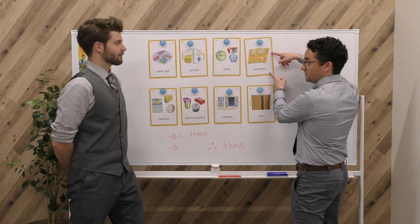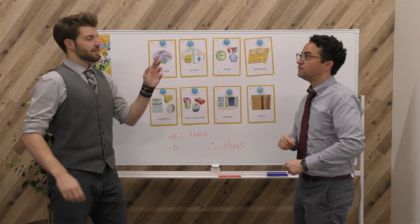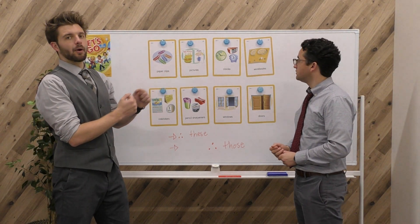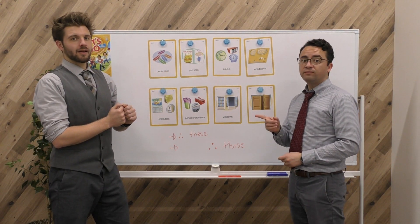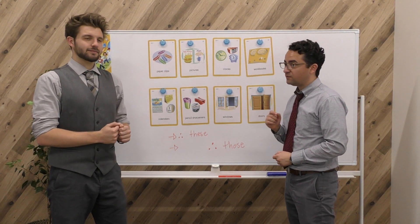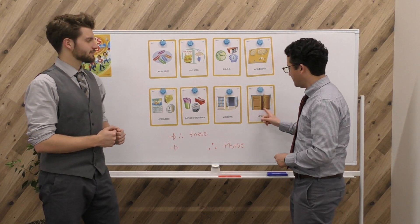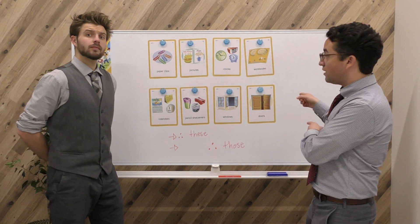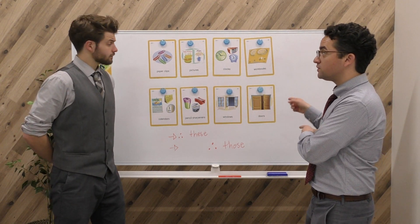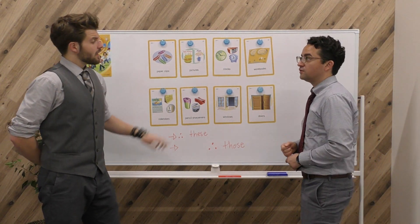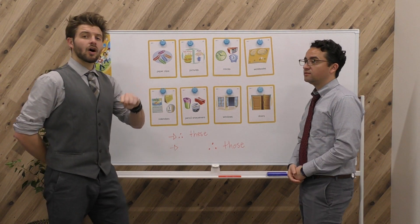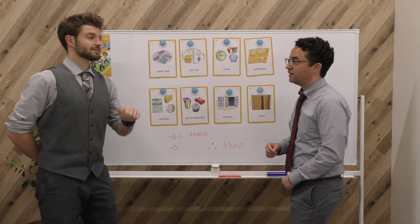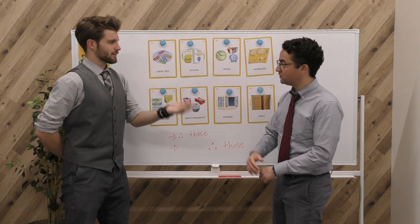What are these? They are workbooks. Very nice. What are those? They are doors. Very nice. All right. Let's switch.